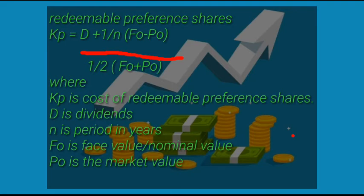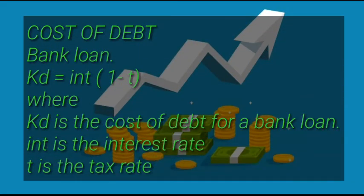Now let's look at the cost of debt. Under cost of debt we have bank loans. The formula is: cost of debt equals interest times (1 minus t), where kd is the cost of debt for a bank loan, int is the interest rate, and t is the tax rate.